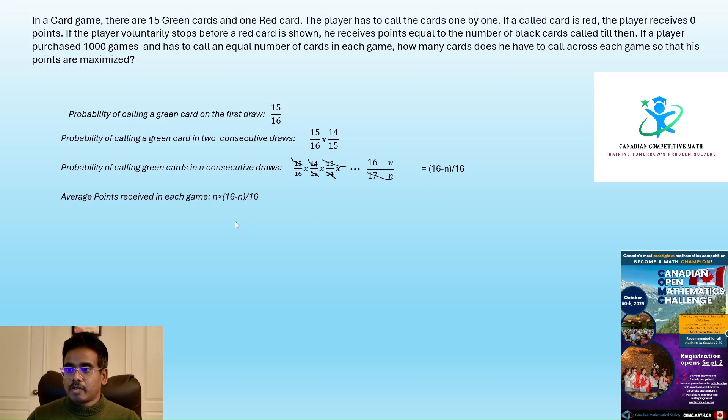So the average, so if he is pulling n cards for each game over 1000 games, on an average, each game he will be getting around n times 16 minus n by 16 points. It is the total number of points he receives times the probability of getting green card in n draws in a given game. For 1000 points, it will be 1000 times n times 16 minus n by 16.